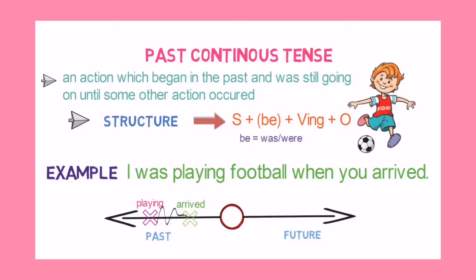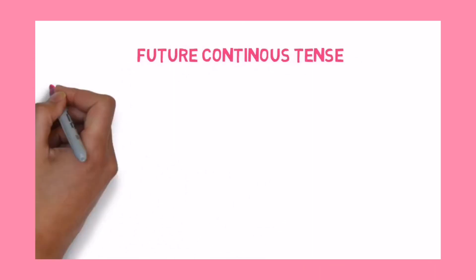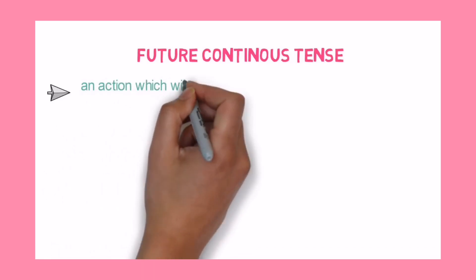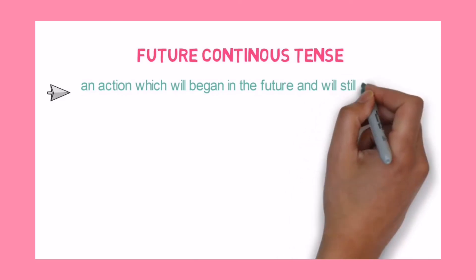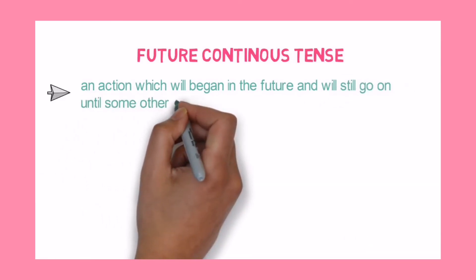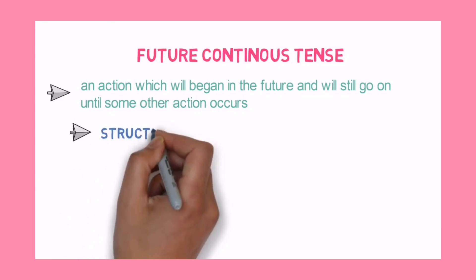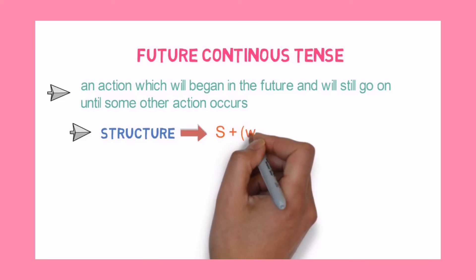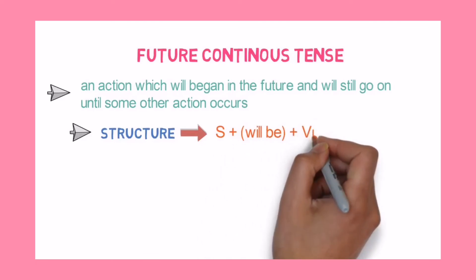Now let's look into the next tense, that is future continuous tense. Future continuous tense refers to an action which will begin in the future and will still go on until some other action occurs. The structure of future continuous tense is subject plus will be or shall be plus verb-ing form plus object.